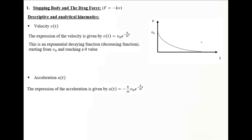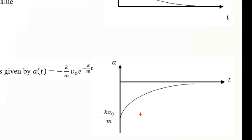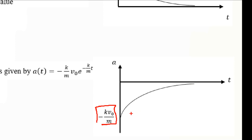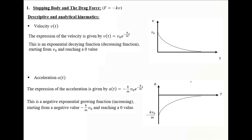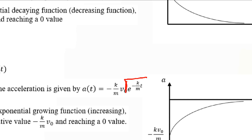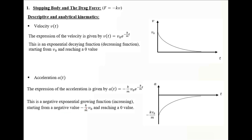Regarding the acceleration, a(t) equals minus K over M times V0 times e to the power minus K/M times T. The graphical representation shows acceleration starting from a negative value of minus K over M times V0 and growing toward zero — a negative exponentially growing function — because although it's a decaying factor, the overall acceleration increases due to the negative sign, reaching zero.